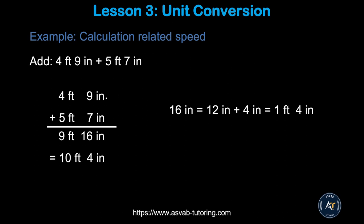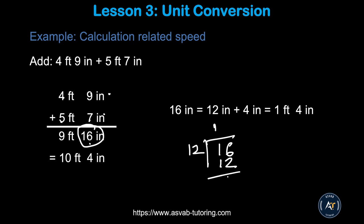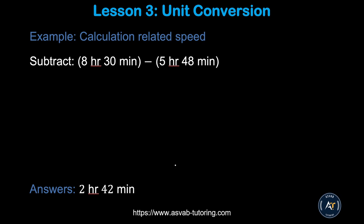Now let's learn how to add feet with inches together — it's not like a typical addition. Say you have 4 feet 9 inches plus 5 feet 7 inches. Add them: 9 plus 7 is 16 inches, and 4 plus 5 is 9 feet. But anytime you have inches more than 12, you need to convert into feet. 16 divided by 12 gives 1 remainder 4, so you get one extra foot. Adding that up gives you 10 feet and 4 inches. Try the practice problem and make sure you get that answer.